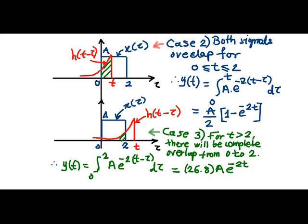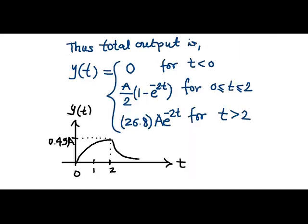Finally we combine the entire output y(t), that is the output of convolution integral for three different regions: for t less than 0, for t between 0 to 2, and for t greater than 2.